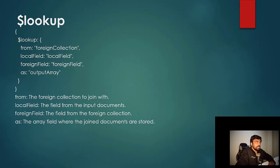This is the syntax of the lookup stage. You provide the lookup stage on the collection and provide 'from', that is the foreign collection you want to join. You provide the 'localField', that is the local field name you want to map with the one in the foreign collection. You provide the 'foreignField', that's the field in the foreign collection which maps to your local field.